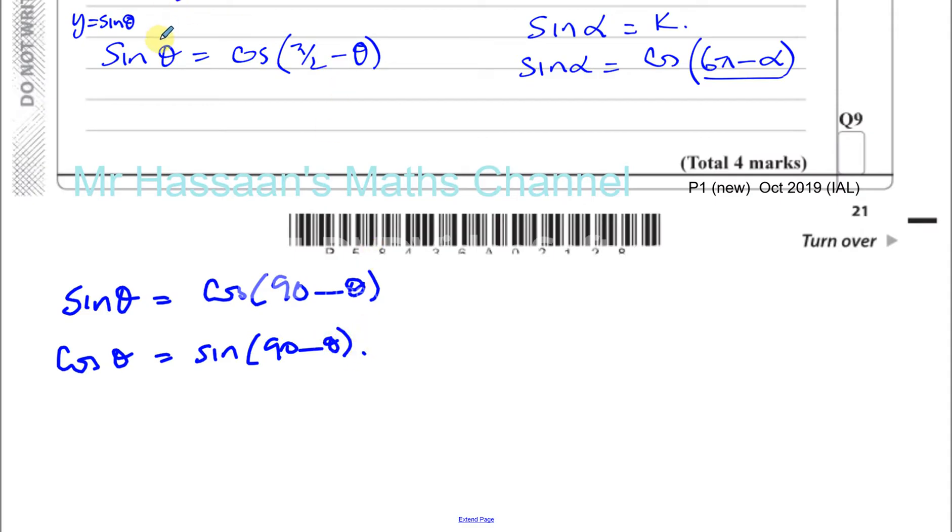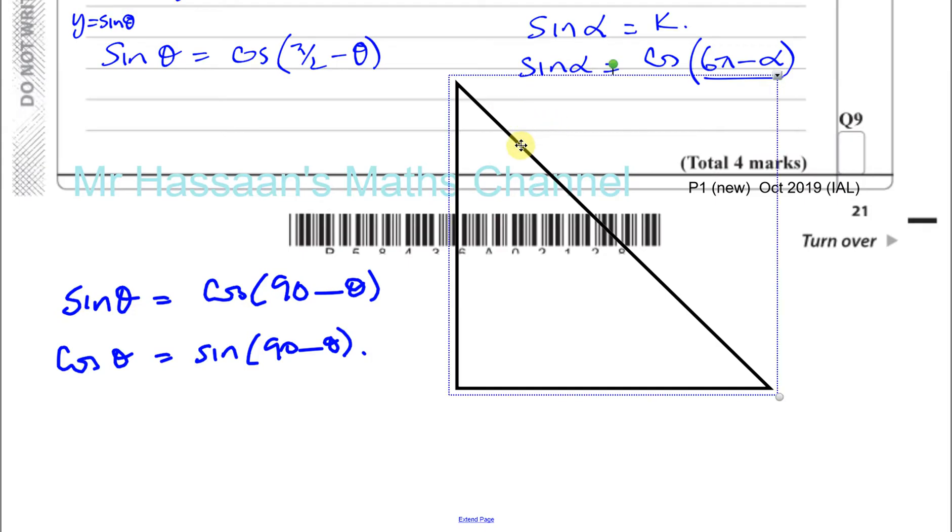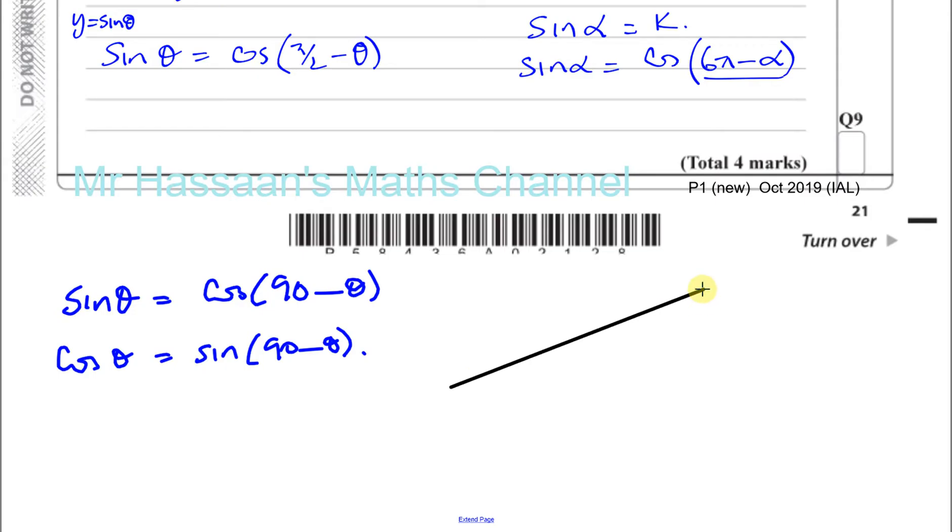So what I'm going to do now is just to show you how that actually works, just so that it's clear to you. I'll have to just draw it manually, no problem. So I need to draw a right angle triangle, which I'll just draw like this. So you have a right angle triangle.